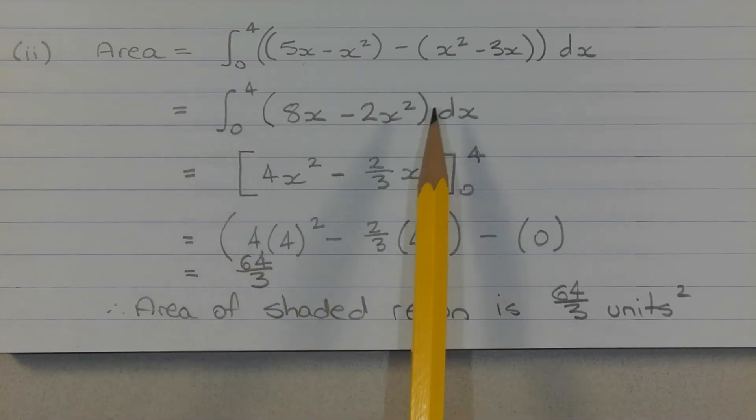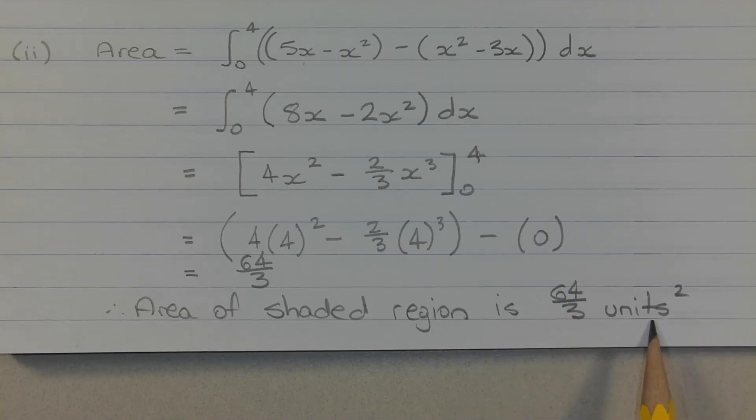Performing the integration we get 4x squared minus 2 over 3x cubed from x equals 0 to x equals 4. Applying the limits of integration we get 4 times 4 squared minus 2 over 3 times 4 cubed in brackets minus 0 which equals 64 over 3. Therefore the area of the shaded region is 64 over 3 square units.